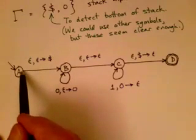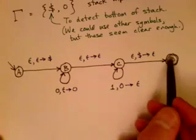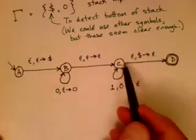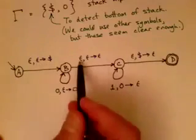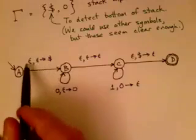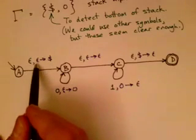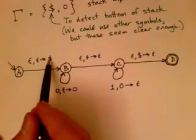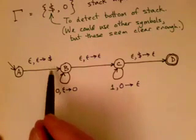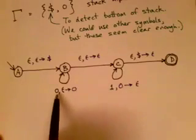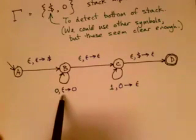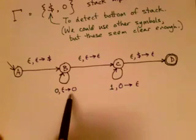Here's the starting state. In this case, we only have one final state — D is our accepting state, though in general we could have multiple accepting states. The first transition is taken ignoring the input and ignoring what's on the stack, and we push a dollar sign. Then in this transition, when the input is zero, we can take this transition — we ignore the stack and push a zero. So every time we read a zero, we push a zero onto the stack.